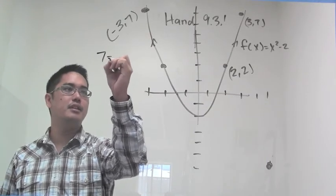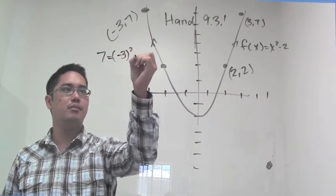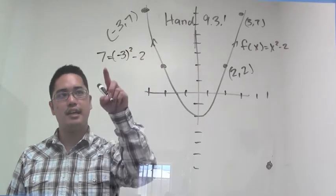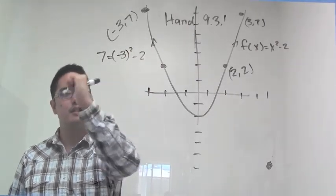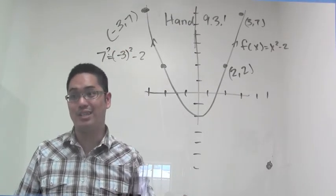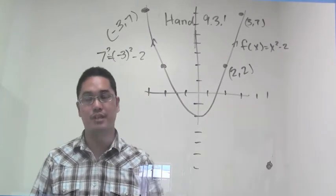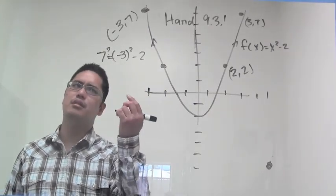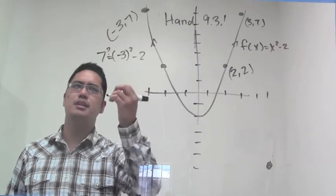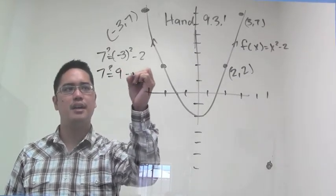I'll have 7 equals negative 3 squared minus 2. Actually, I can't say it's completely equal to—what I probably should say is 7 question mark equal—which indicates to me I'm asking, is it equal to negative 3 squared minus 2? Negative 3 squared is positive 9, so I have 7 equals 9 minus 2.